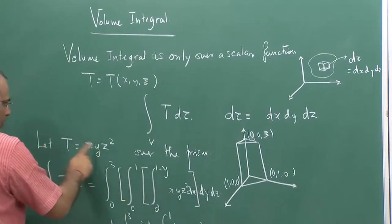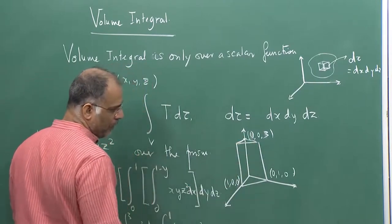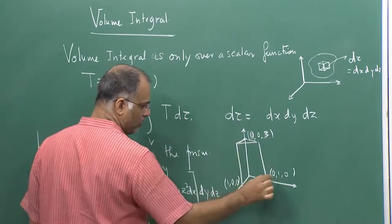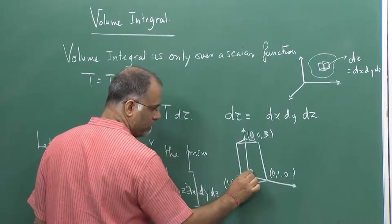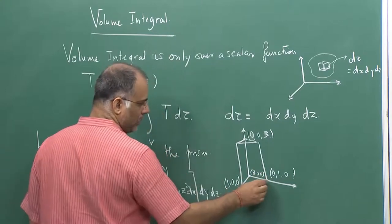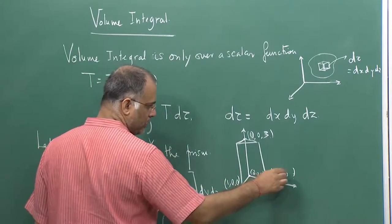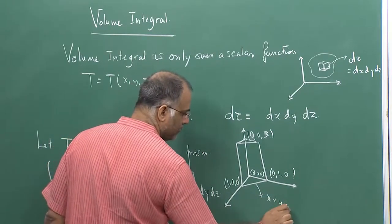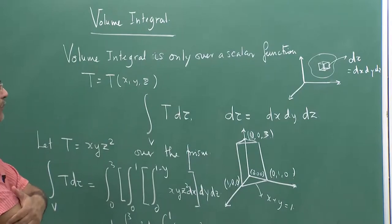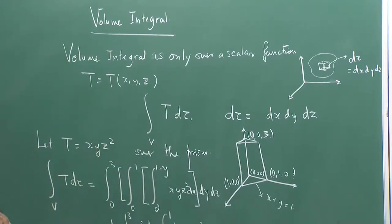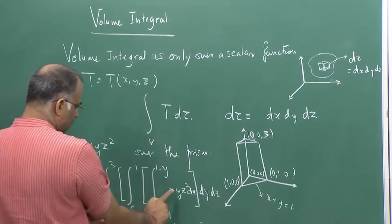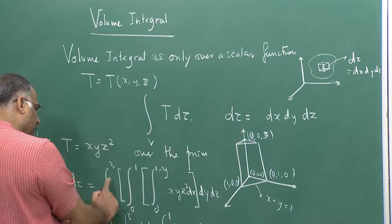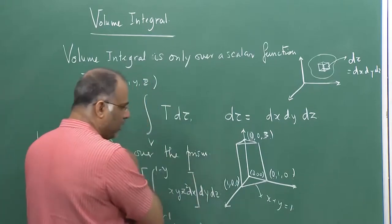I will take this integral over a prism that has vertices at (0,3,0), (0,3,1), (0,0,1), (0,0,0), and the origin. The line joining (1,1,0) and (0,0,1) is given in two dimensions by the equation x plus y equals 1. So when y varies from 0 to 1, x varies from 0 to 1 minus y. Integrating with x from 0 to 1−y, then y from 0 to 1, then z from 0 to 3, we get the answer 3/8.